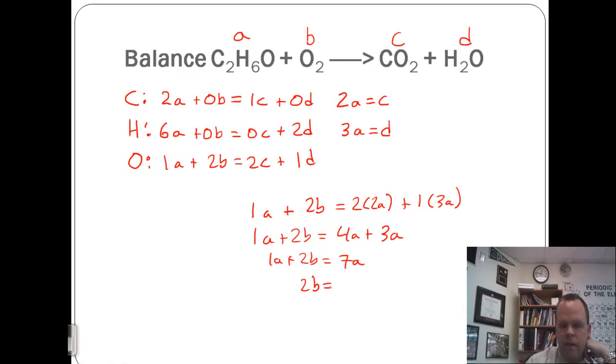Or 2B equals 6A, or B equals 3A. So we have B equals 3A, C equals 2A, D equals 3A. We're going to set A equal to 1.